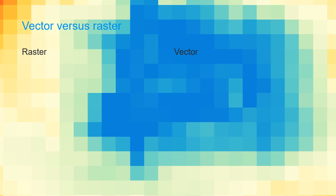Now we've learned about both Vector and Raster — what is the main difference between the two? With rasters, it's very difficult to make overlays, which is very easy with vectors. With rasters, we need to use transparency or blending, or we need to mask certain data and make it transparent by considering it as no data.